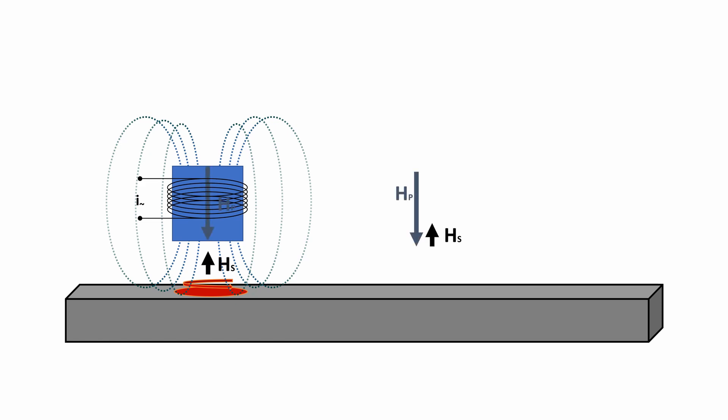For this, we use an additional measuring coil, and the measuring coil records the resulting magnetic field, meaning the difference between the transmitted field and the magnetic field of the eddy currents.